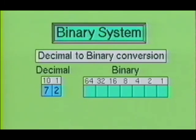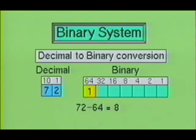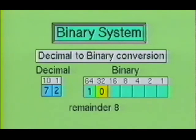To convert a decimal number to binary, you first subtract the largest possible power of 2, then keep subtracting the next largest possible power from the remainder, placing 1s in each column of the number you were able to subtract, and 0s in the columns for the numbers you could not use. In our example, 64 is the largest possible power of 2 that can be subtracted from 72, because the next largest power of 2 is 128. When we subtract 64 from 72, we have a remainder of 8. Since we used 64, we place a 1 in the 64 column. Next, 32 is larger than our remainder of 8, so we cannot use 32 — therefore a 0 is placed in the 32 column.